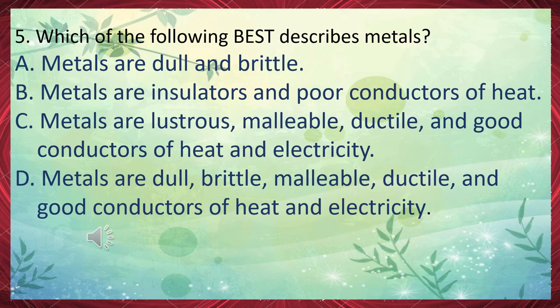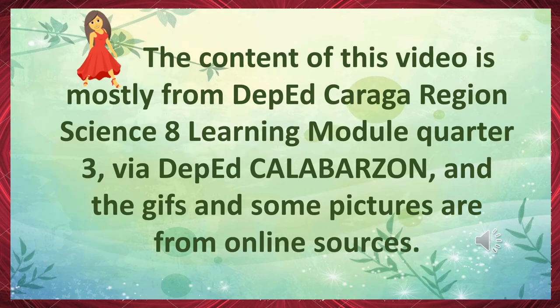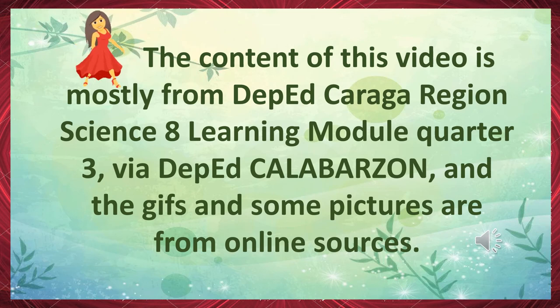Number 5: Which of the following best describes metals? A. Metals are dull and brittle. B. Metals are insulators and poor conductors of heat. C. Metals are lustrous, malleable, ductile, and good conductors of heat and electricity. D. Metals are dull, brittle, malleable, ductile, and good conductors of heat and electricity. The correct answer is letter C. The content of this video is mostly from DepEd Caraga Region Science 8 Learning Module Quarter 3, via DepEd CALABARZON, and the GIFs and some pictures are from online sources.